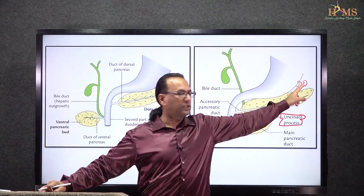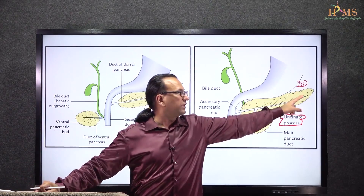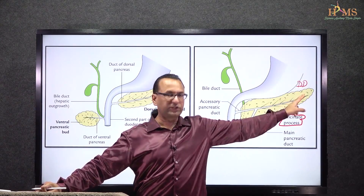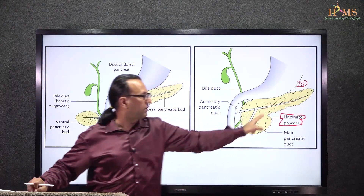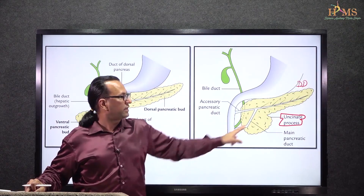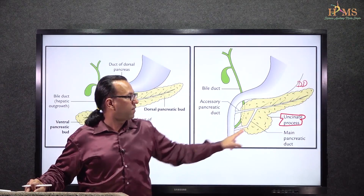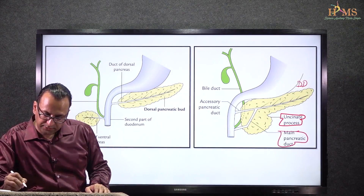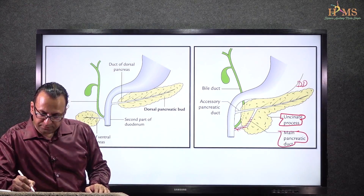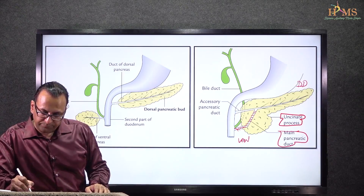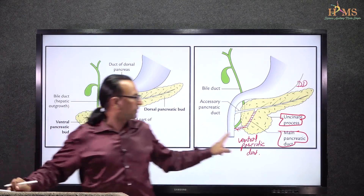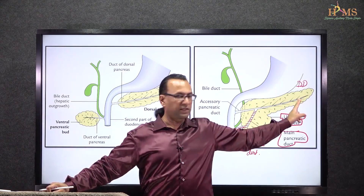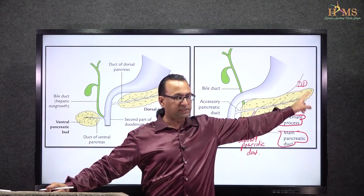Remember DD: the dorsal pancreatic bud forms the distal pancreatic duct. The proximal pancreatic duct is formed by the ventral pancreatic bud. So the main pancreatic duct proximally is contributed by the ventral pancreatic duct, while the distal part of the pancreatic duct comes from the dorsal pancreatic bud.